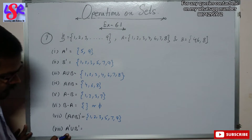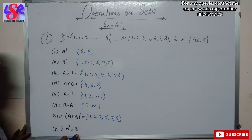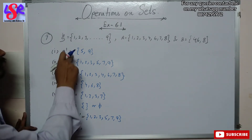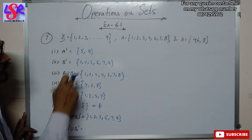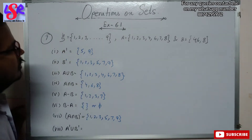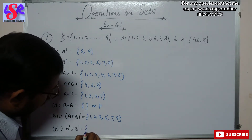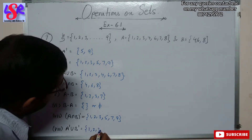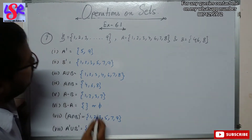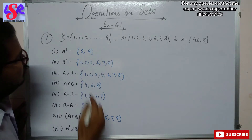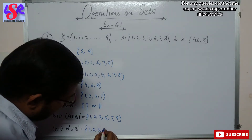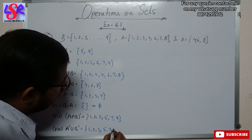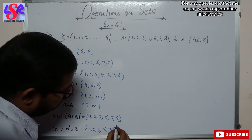Now we have to find A complement union B complement, the union of A complement and B complement. We write all their terms together: 1, 2, 3, 5, 7 and 9 — since 4 is not in either complement.